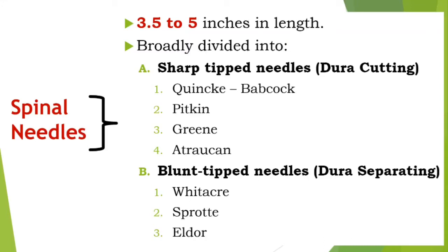Spinal needles are usually 3.5 to 5 inches long and are broadly divided into sharp tip and blunt tip needles. Sharp tip needles are also known as dura cutting, and blunt tip needles are also known as dura separating. Examples of sharp tip needles include Quinckes, Pitkins, Greens, and Atrocan, while examples of blunt tip needles include Whitakers, Sprouts, and Elders.